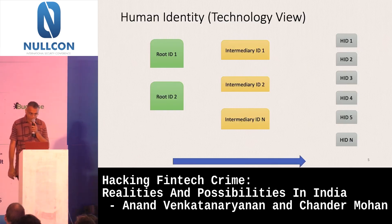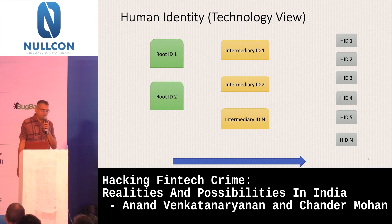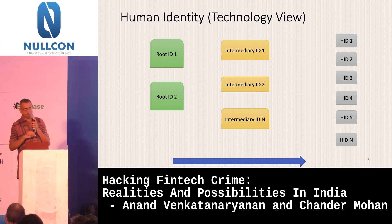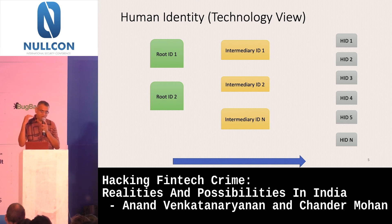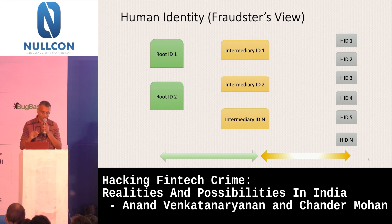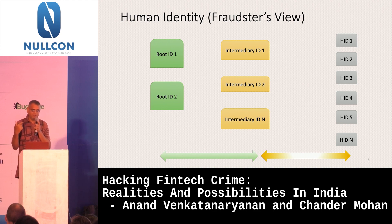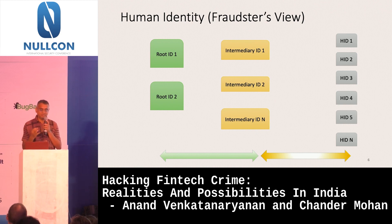From a pure technology point of view, this is how the certificate management system of HTTPS works — you have root identities that certify intermediate identities, and then human identities. This is how DSC providers, digital sign providers, think of technology: as a linear view. But this is not how fraudsters look at it. They think of it as a circular pattern. They create root IDs, then intermediary IDs, then human IDs, and recycle it back into root IDs.